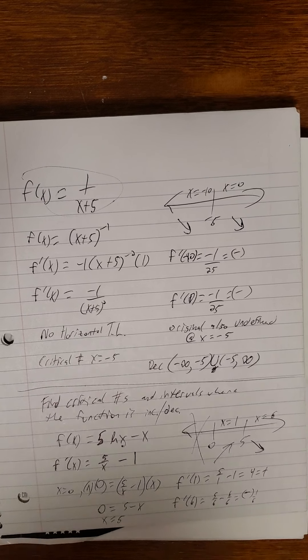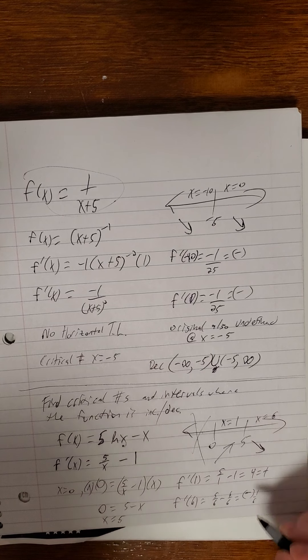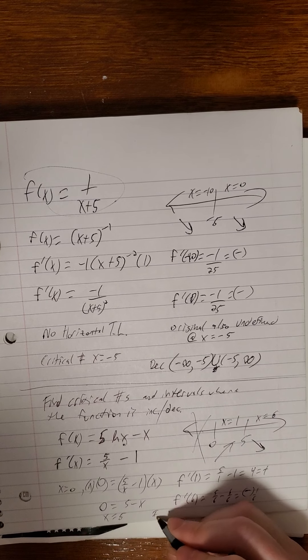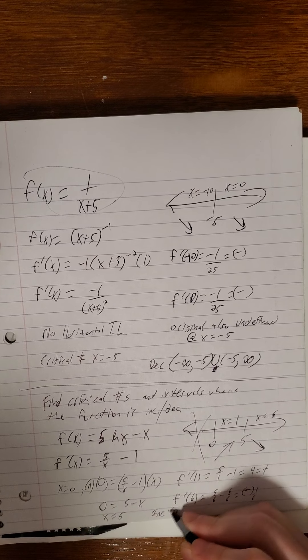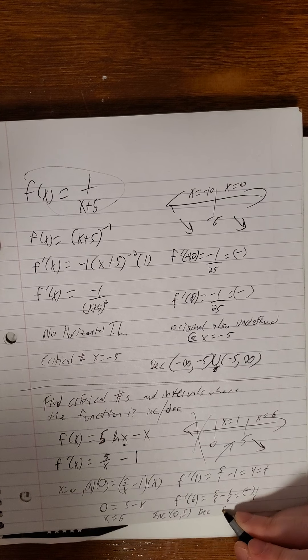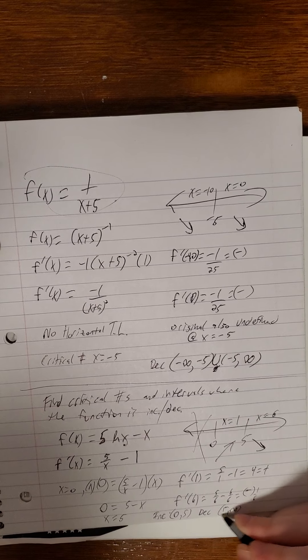And we're running out of real estate here. We'll fit in here. So we are increasing on 0, 5, and we are decreasing on 5 to infinity.